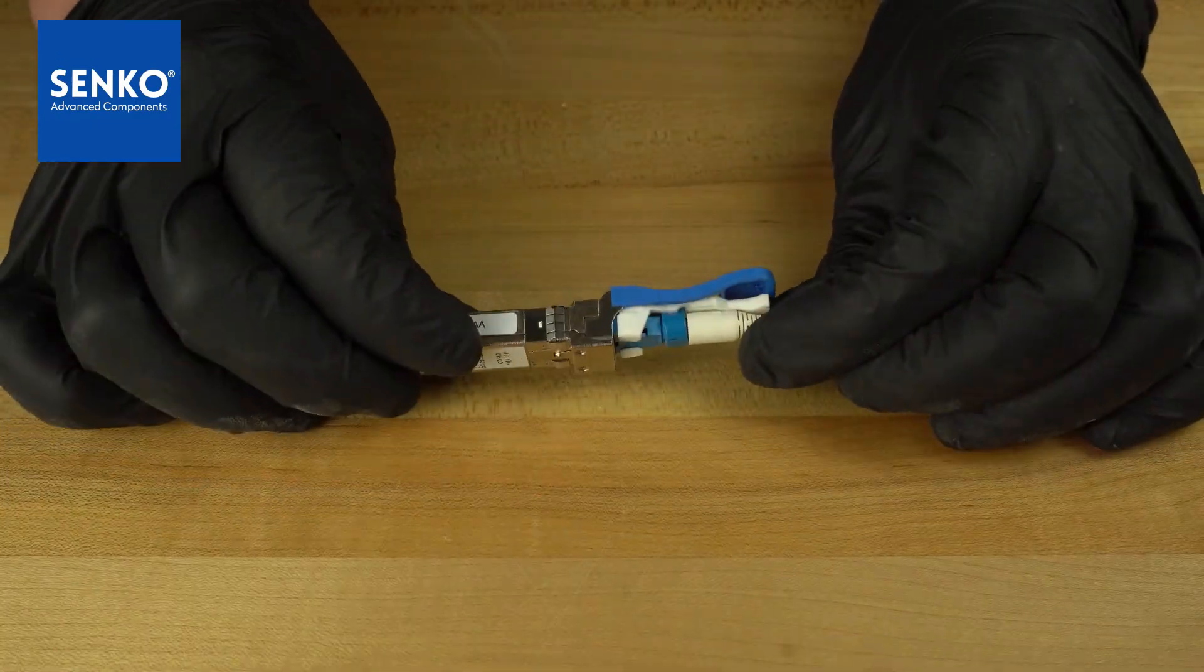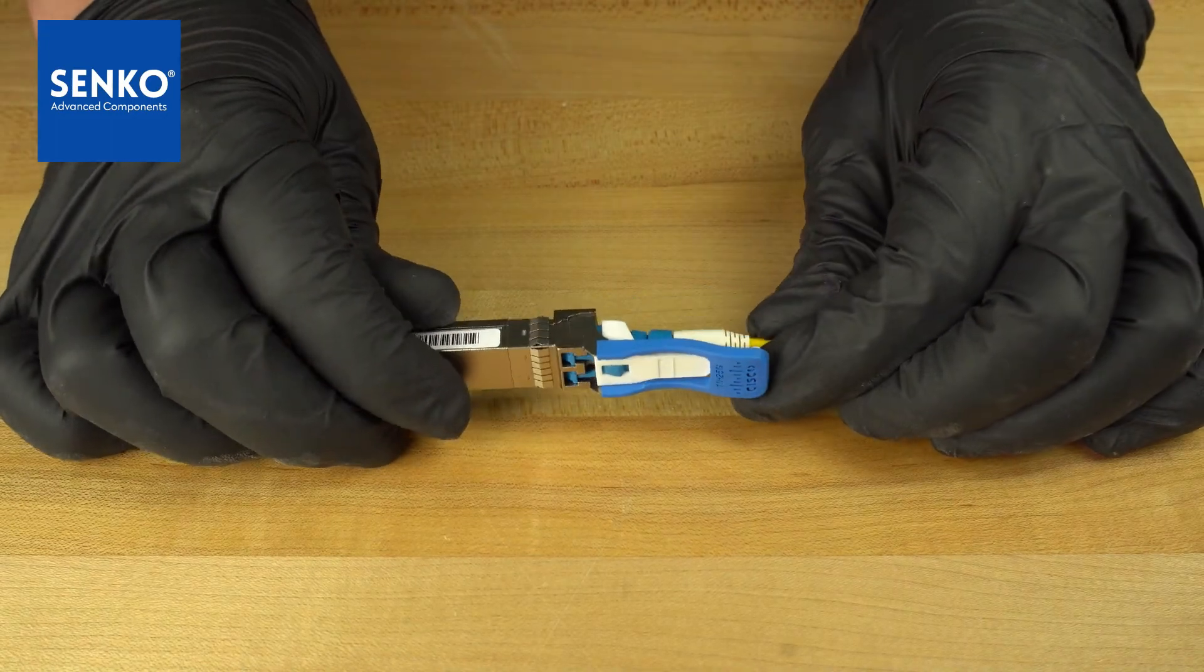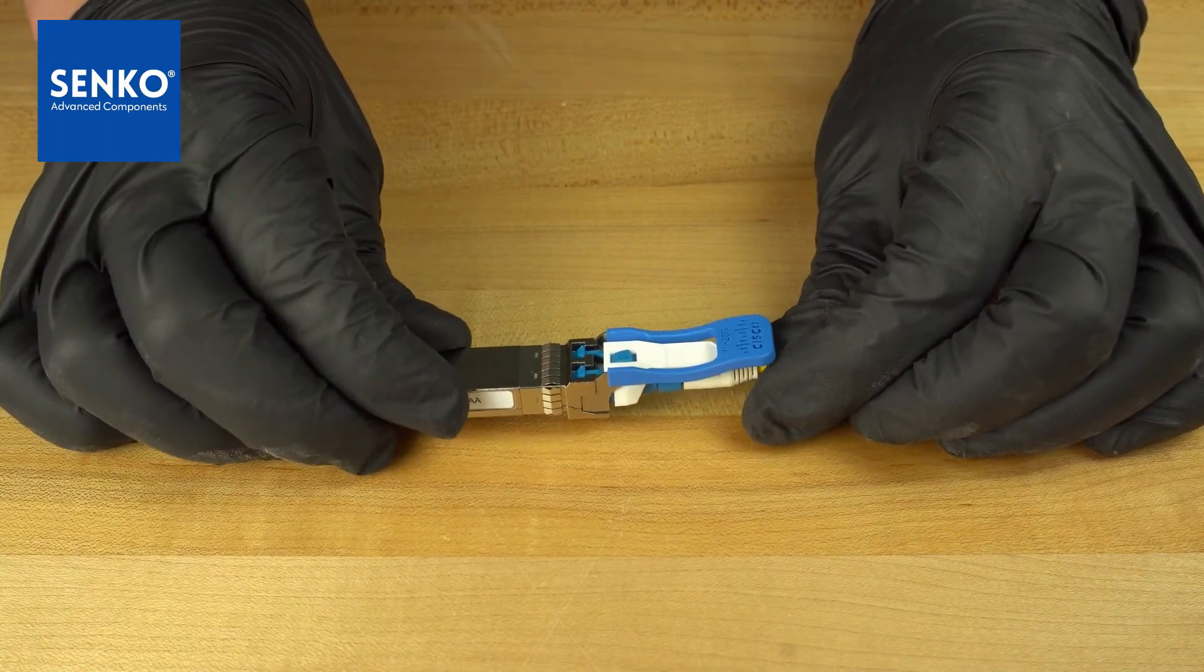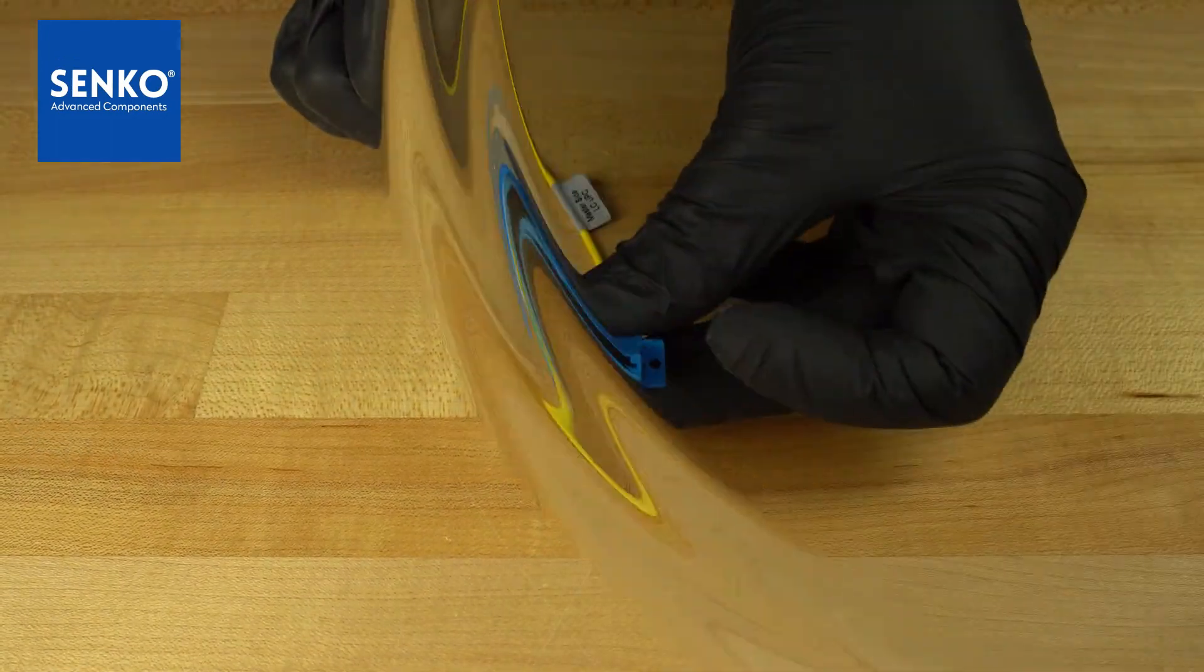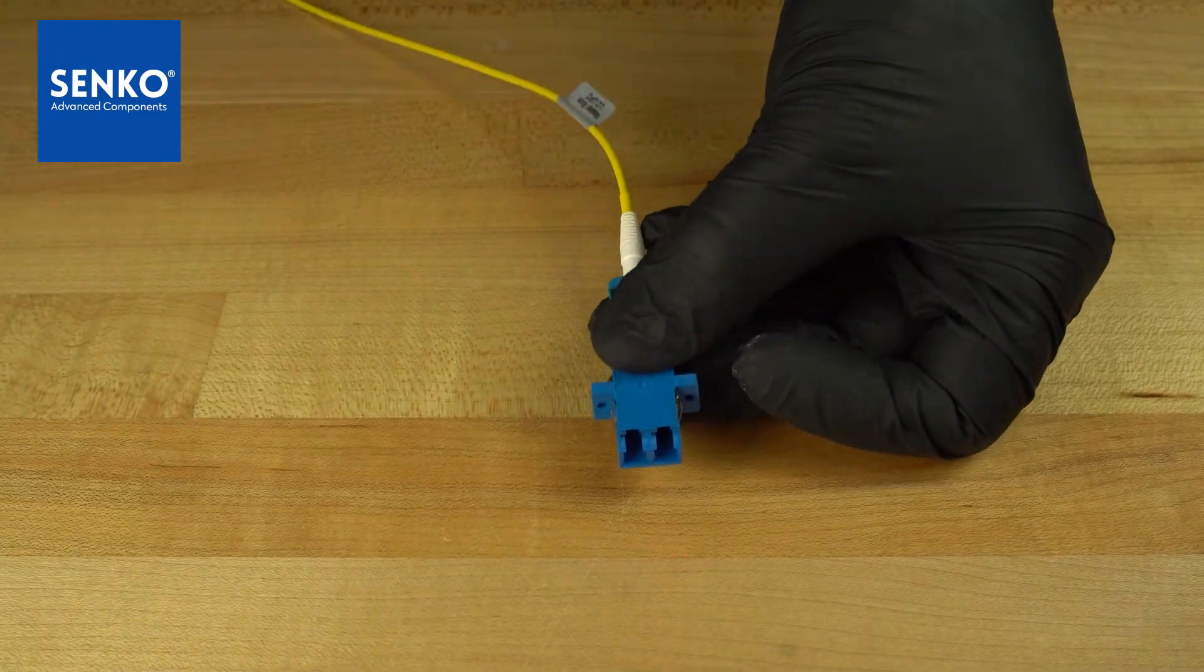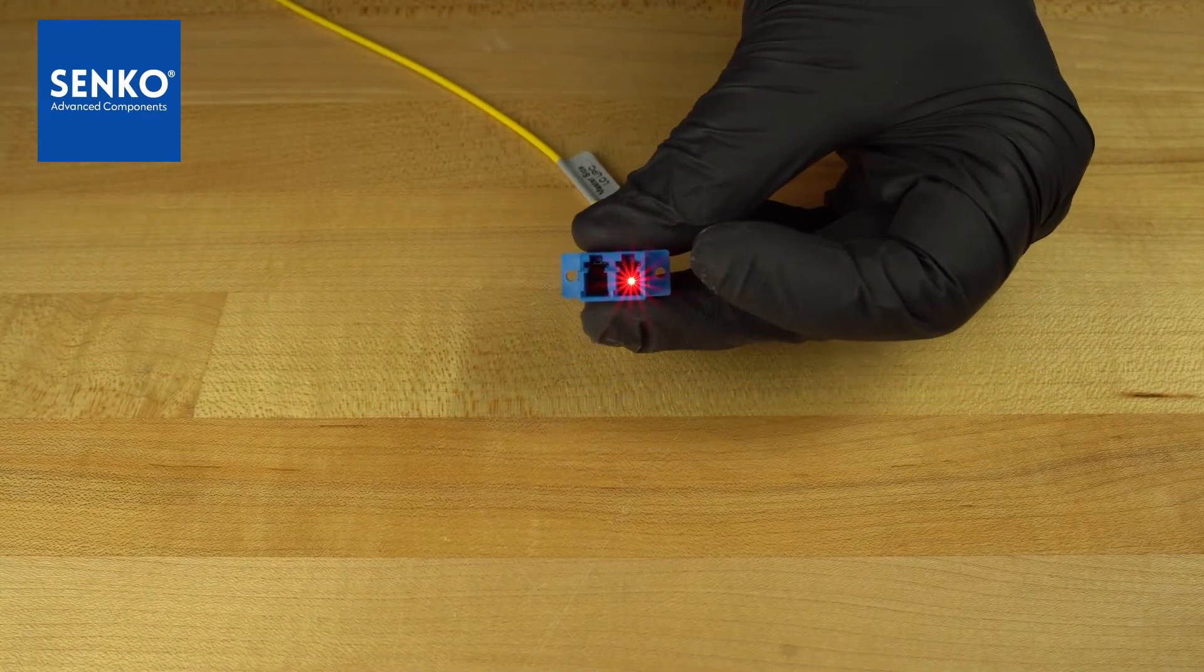Typical transceivers in fiber optic telecommunication networks use infrared light that is invisible to the naked eye. Just because it's not visible does not mean that the light radiation can't hurt you.